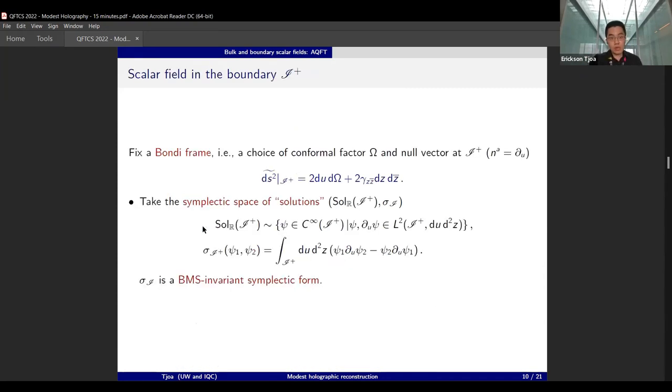The way now you want to quantize the scalar field on the boundary is really the same as the bulk, except that now you don't really have an equation of motion—you don't have a Klein-Gordon equation there. So now you pretend you have one that is compatible with the bulk. You construct the space of solutions in this manner where the derivatives along the null generators and the smooth function itself is square integrable. You construct the most natural symplectic form on scri plus, and it will turn out that this symplectic two-form is invariant under the action of the BMS group.